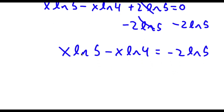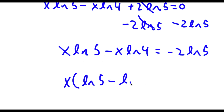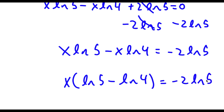So now if I factor out x from x times ln 5 minus x times ln 4, I get x times (ln 5 minus ln 4) is equal to negative 2 times ln 5.